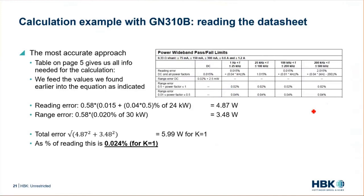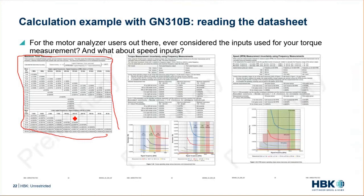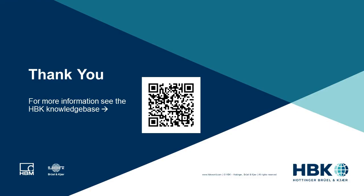Another thing to consider when reading data sheets: we just discussed the electrical inputs, but for anyone doing motor analysis, have you considered the measurement uncertainty of the inputs used for torque and speed measurements? Those are frequency inputs — counters — and they have a specific uncertainty that should be added to your measurement uncertainty calculation. Shown here are screenshots of the uncertainty contribution of the timer counters of the GM310 boards, which can be used to determine the additional uncertainty on torque or speed signals. For HBK or HBM torque transducers, those results are calculated immediately for your convenience.